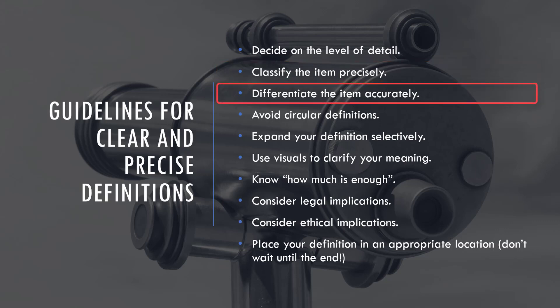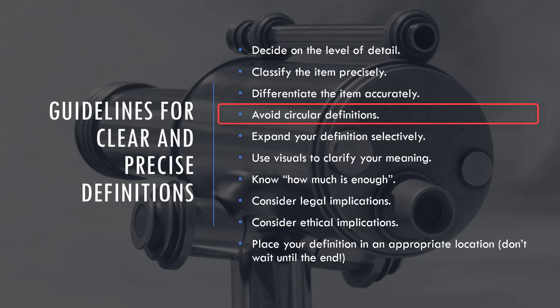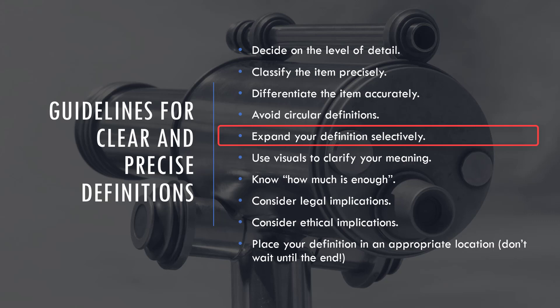Differentiate the item accurately — whenever you point out differences between it and another thing, be accurate. Avoid circular definitions: it's tempting to use the word itself in its own definition, but you cannot do that. Expand your definition selectively — don't define every single item to the fullest extent. Pick and choose what needs stronger definitions, what needs no definition because the audience already knows it, and what might only need a short parenthetical definition.